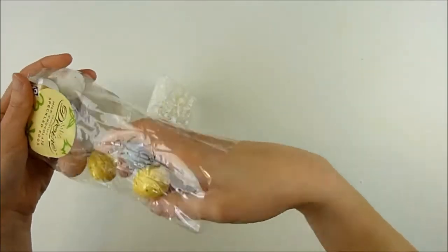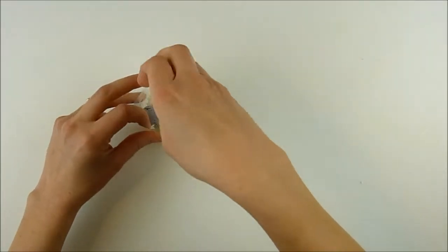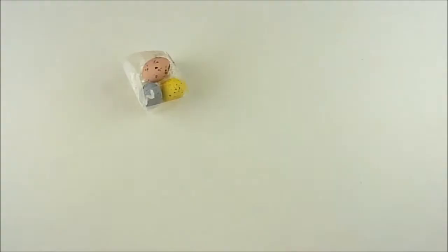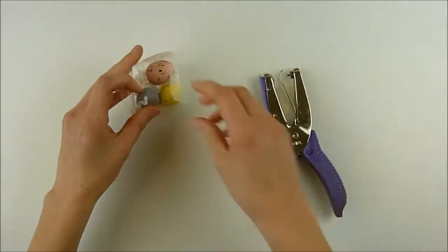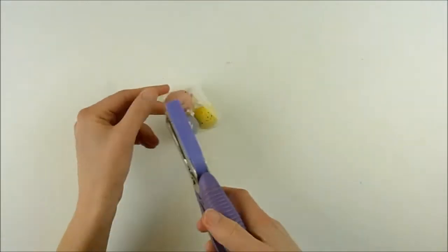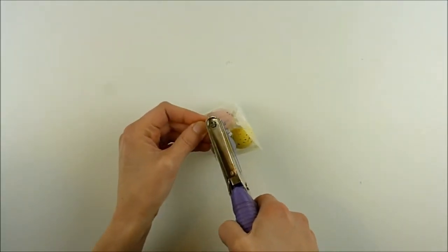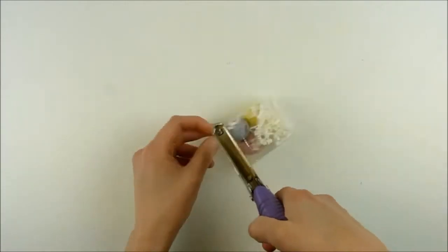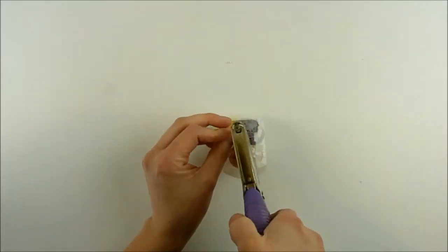So I threw some white shredded paper in there, and then I have some little decorative Easter eggs that I'm putting in there. I like the clear acetate for these because it makes it fun for whatever's in there to show. You can cut these out of patterned paper or anything else, but for this I thought the acetate was kind of a fun way to go.